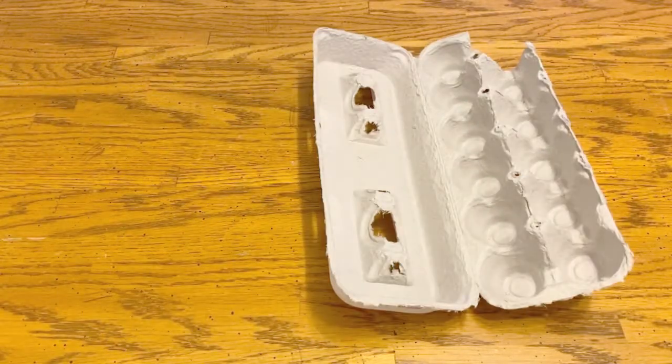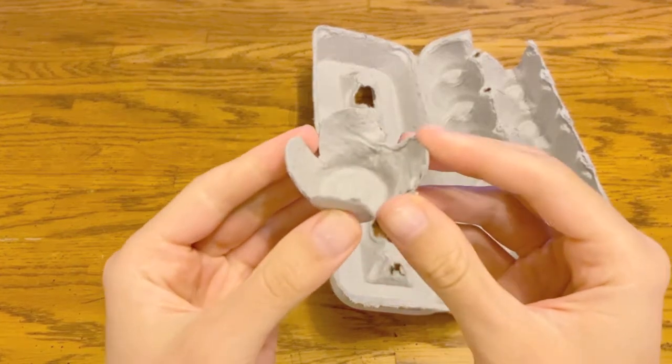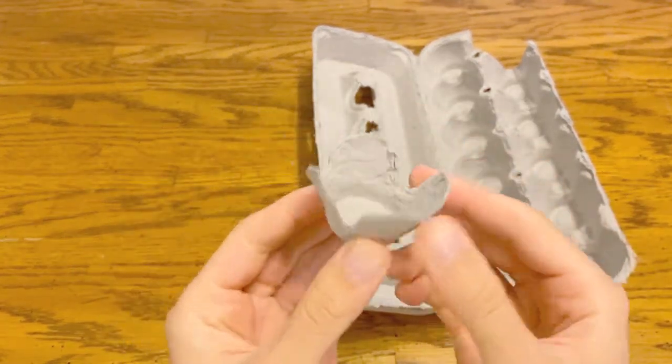The first step is to get an empty egg carton. What are we doing with this? Well it's actually going to be our cherry blossoms. Here's an example that I made.